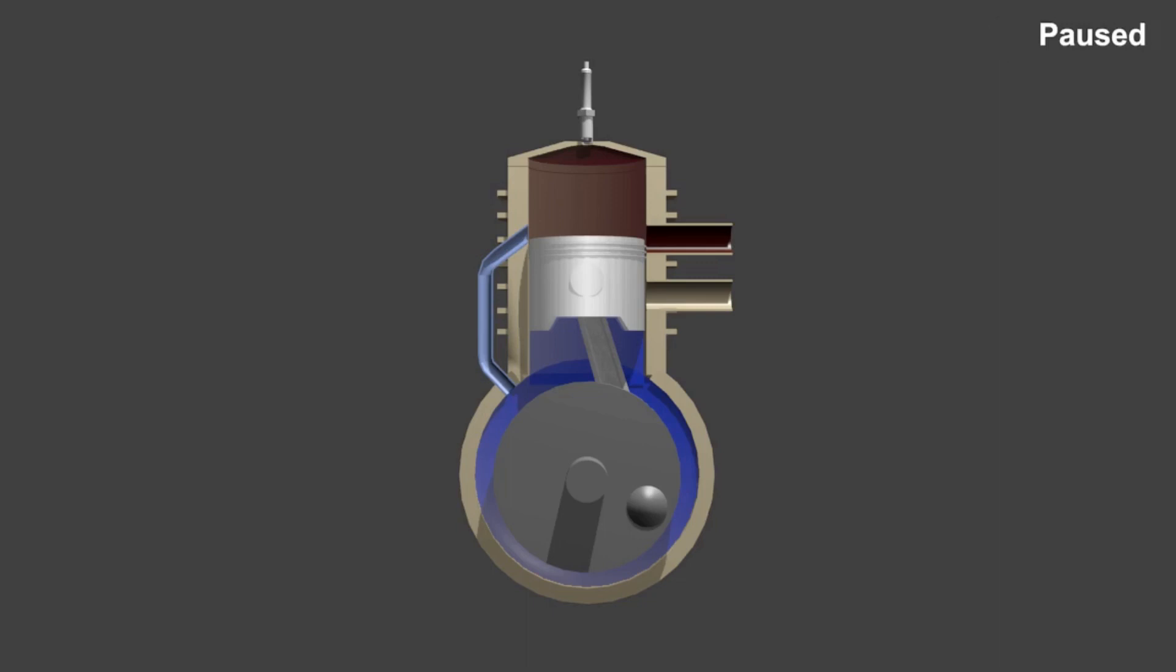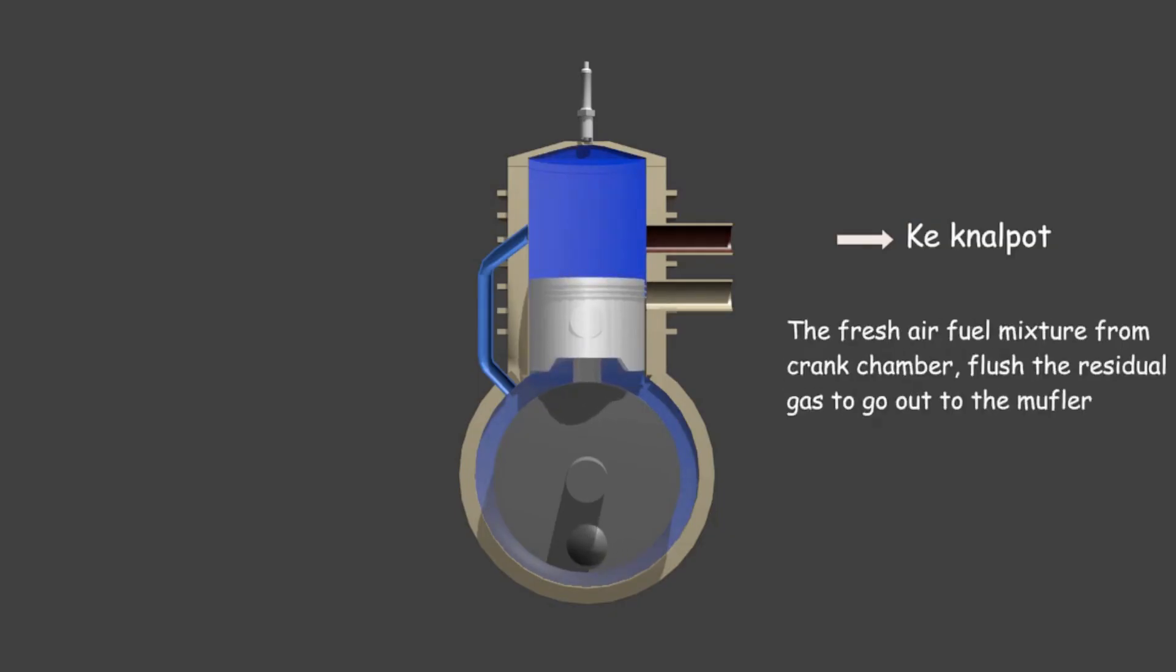At the same time, the piston movement causes the crank chamber to narrow, and the air-fuel mixture is pushed into the combustion chamber. Before the piston reaches the bottom dead center, the exhaust channel opens. Air-fuel mixture from the crank chamber moves to the combustion chamber and pushes the residual gas out into the exhaust channel.